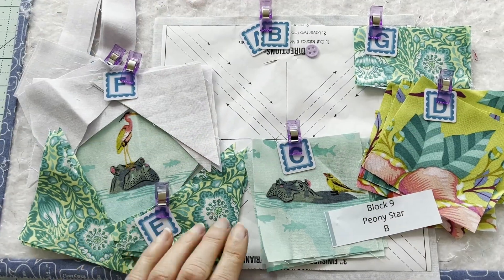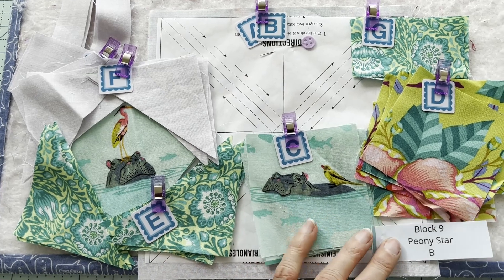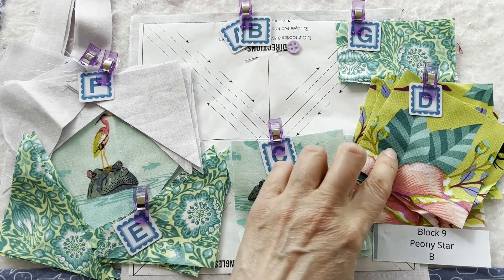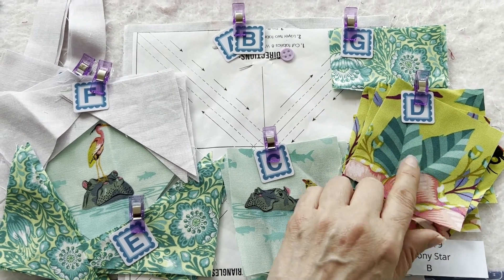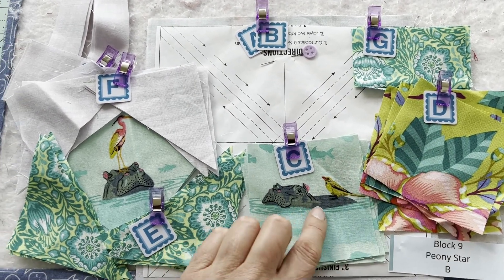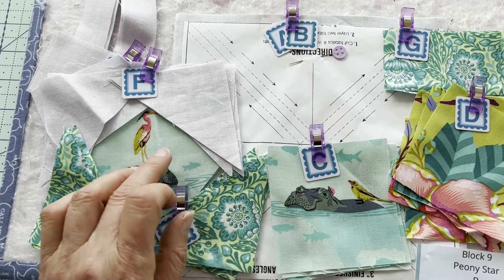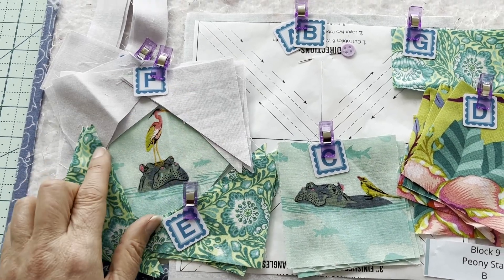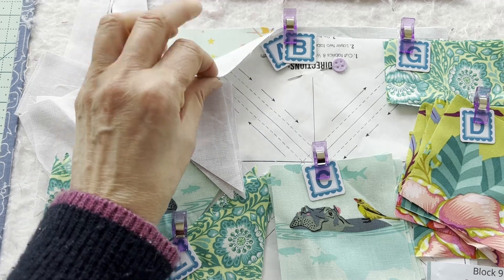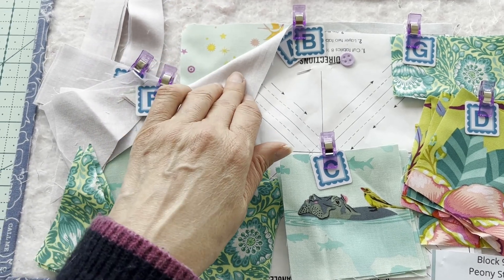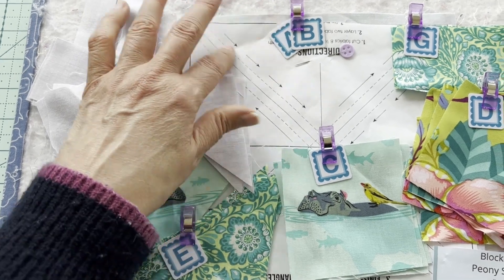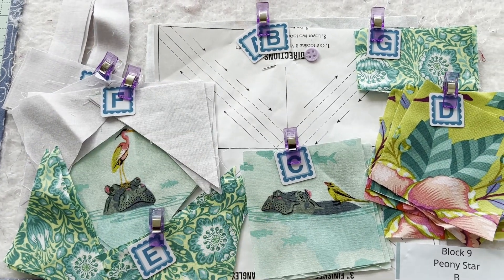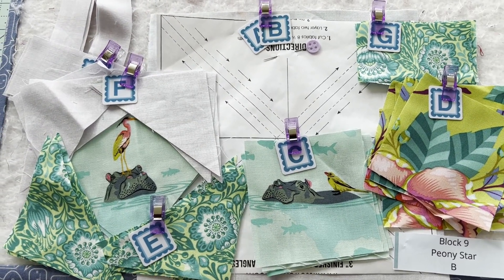And here's my second block for block nine, the peony star. I've cut out this beautiful moon garden. I've sort of picked the leaf rather than the flower because I wanted to get that sort of teal colour. And the cute little hippos and I fussy cut the hippos for the square in the squares and just using that cute little fairy dust print in the mint for the little half square triangles around the outside. So time to get sewing.